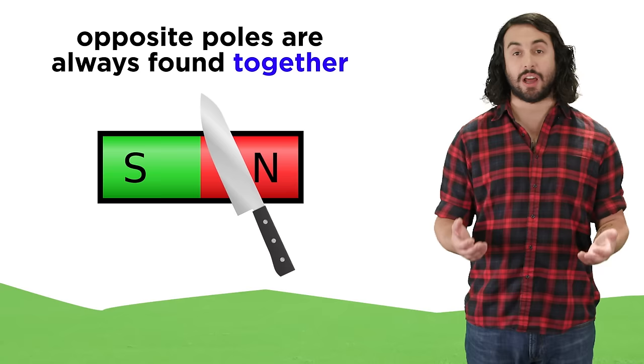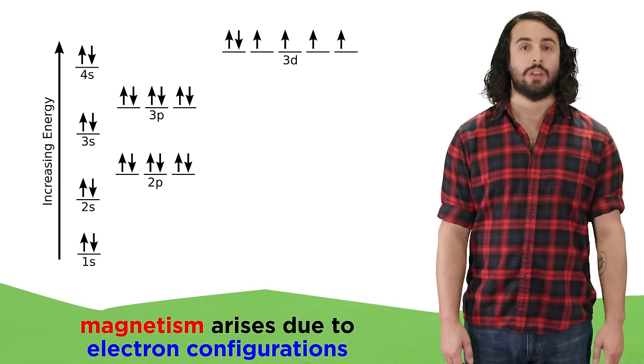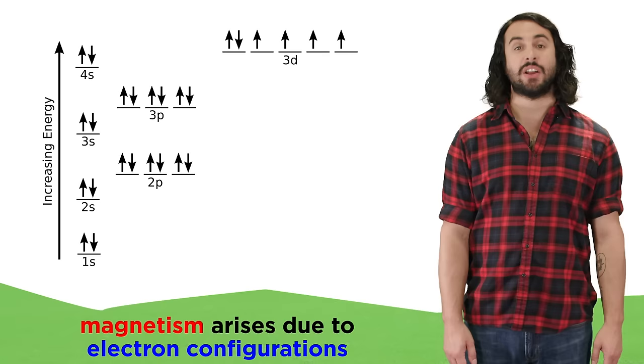The difference is that opposite charges can be isolated, whereas no matter how many times you cut a magnet in half, it will always contain both poles.